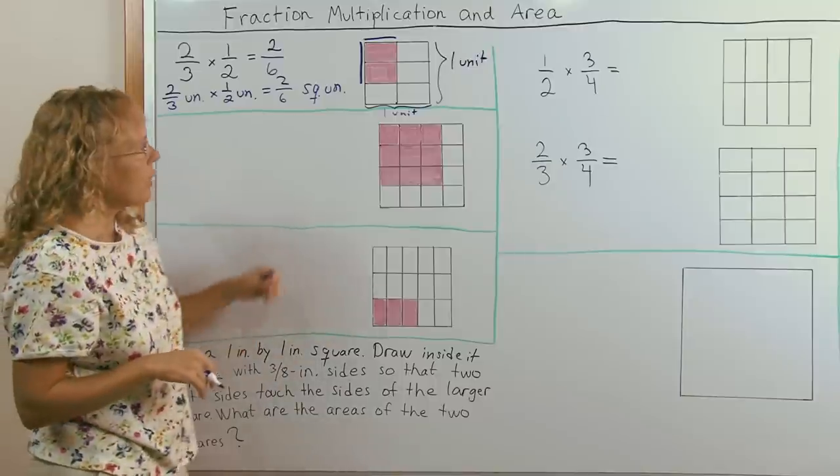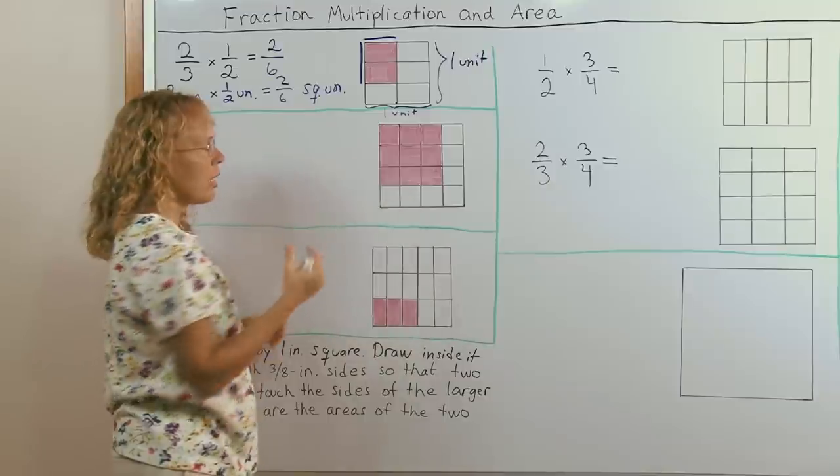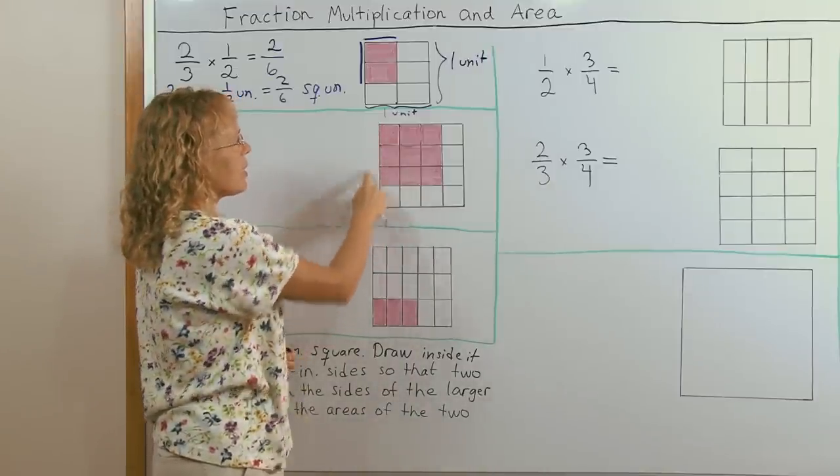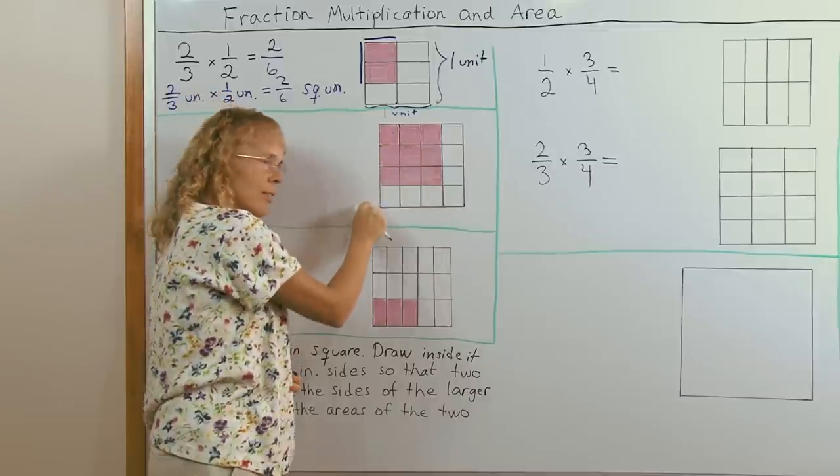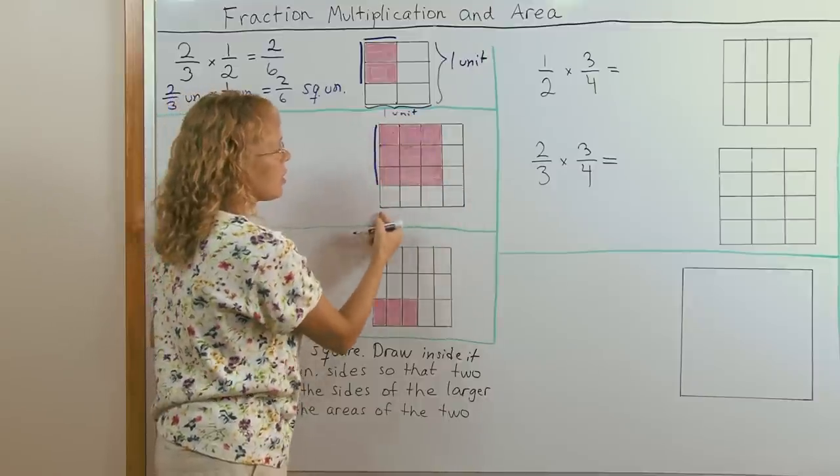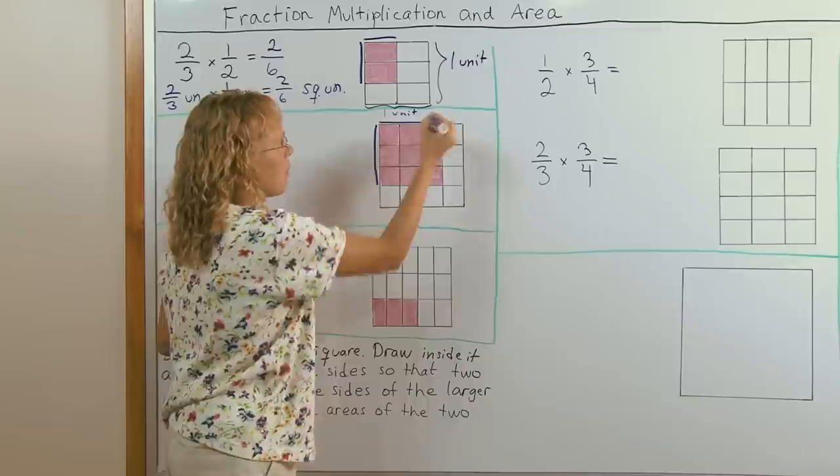Let's look at another example. Here is a rectangle now, or actually it is trying to be a square. And this whole side would be one unit. But I'm only looking at this much of it. And this whole side would be one unit.